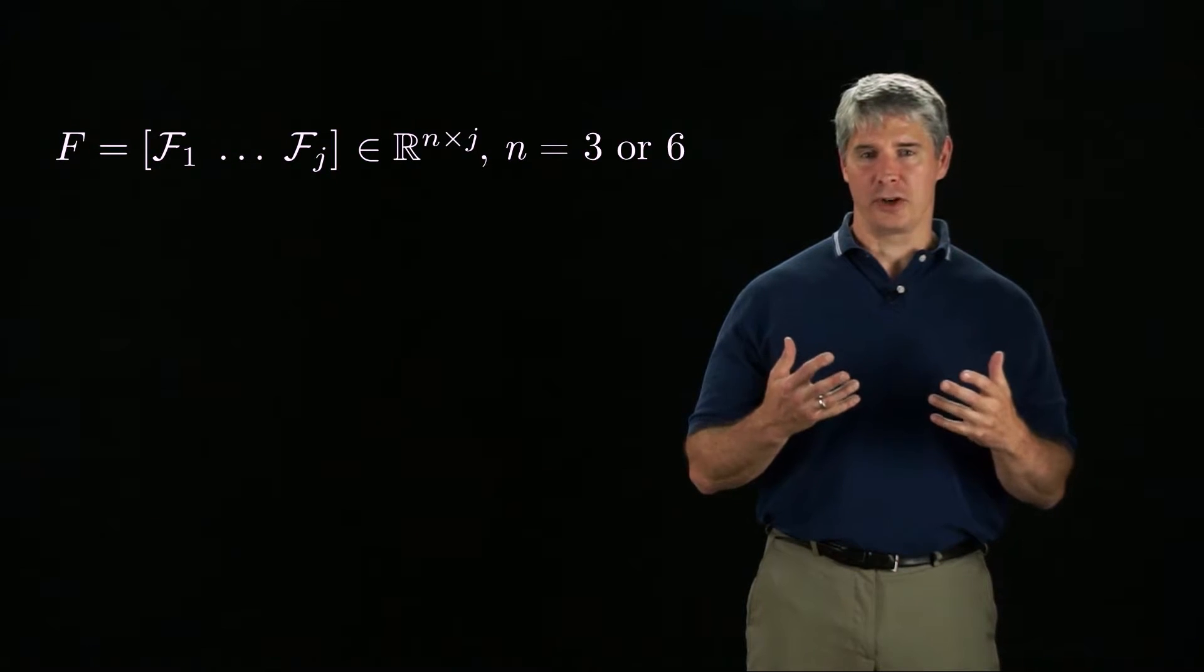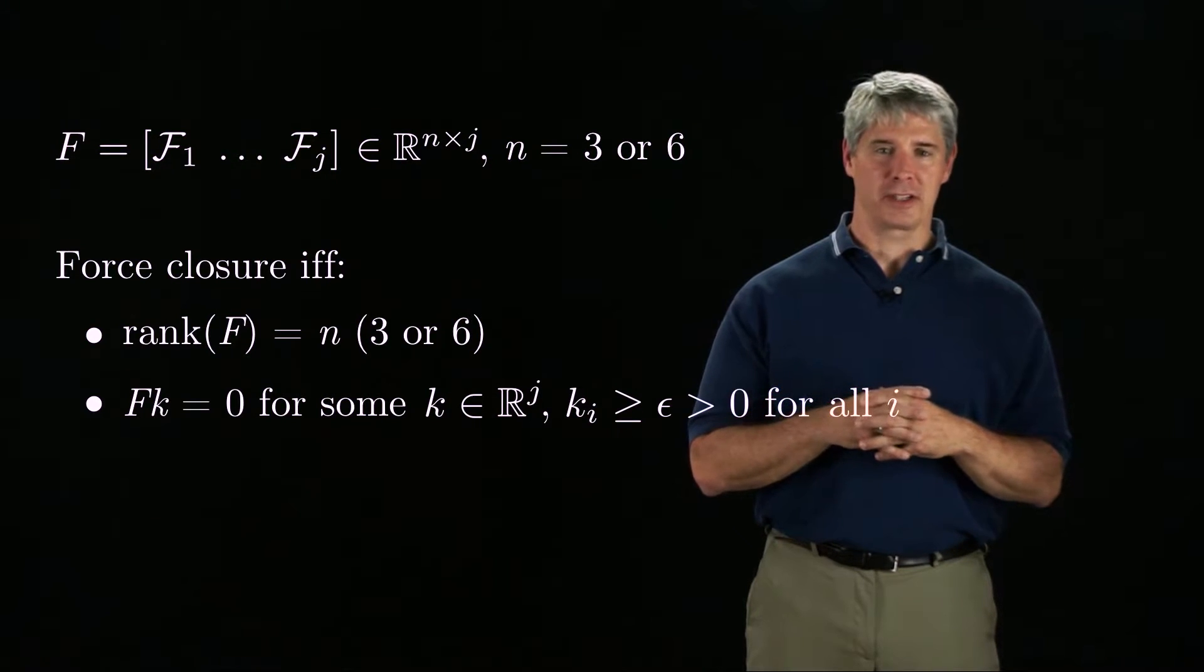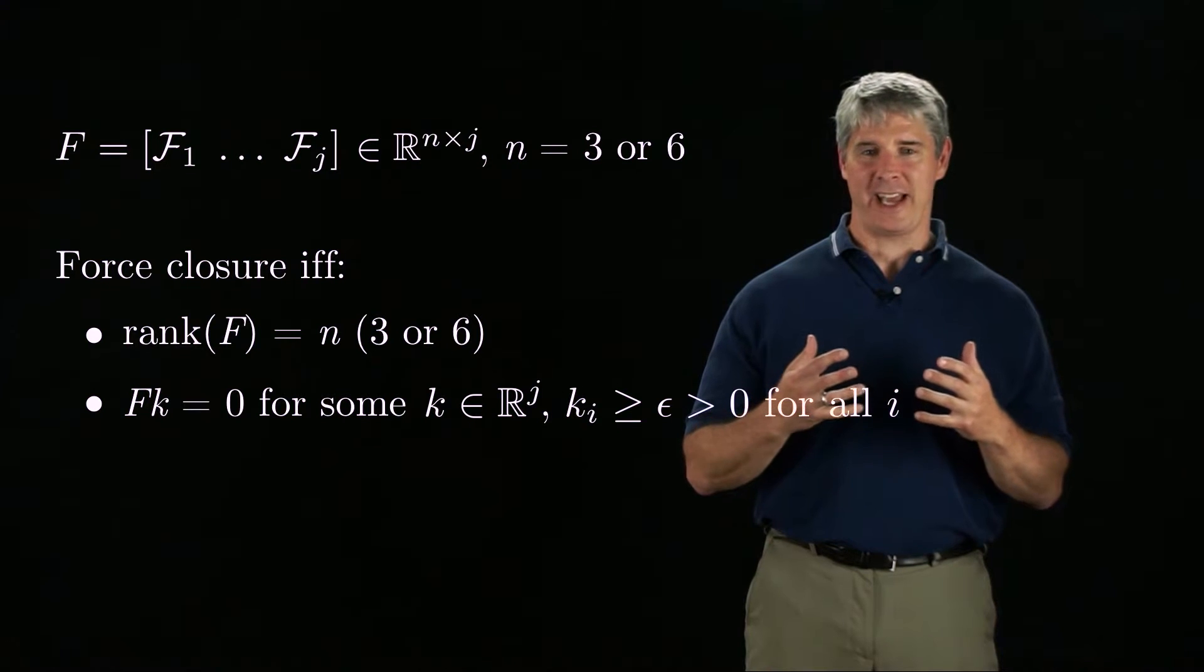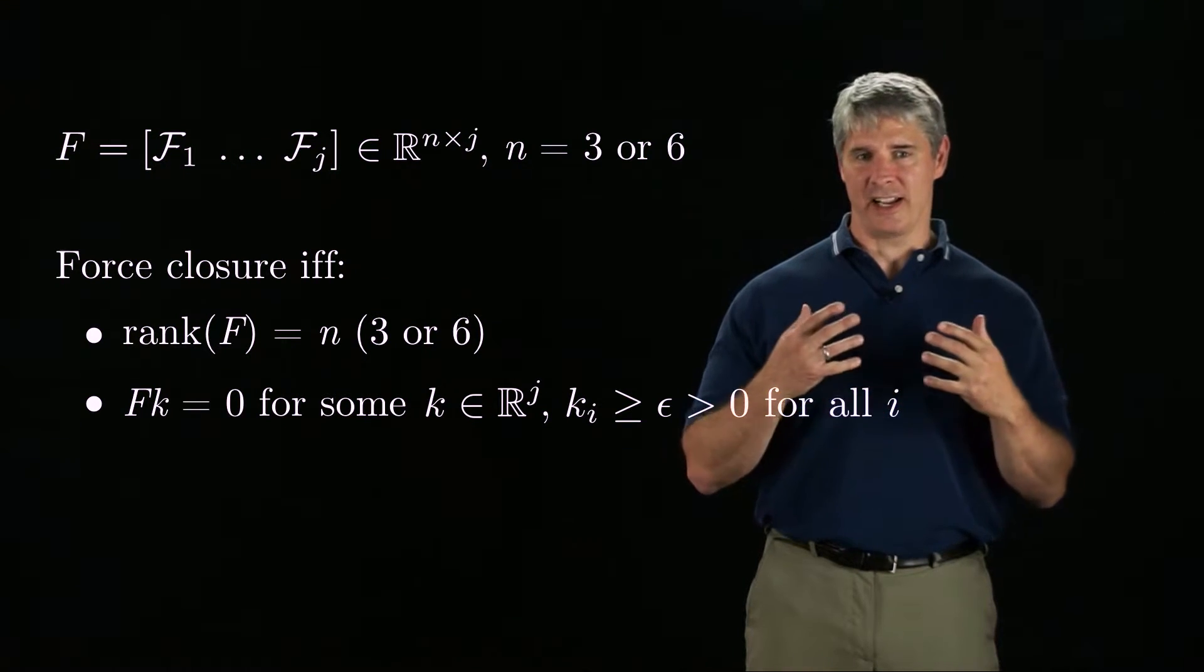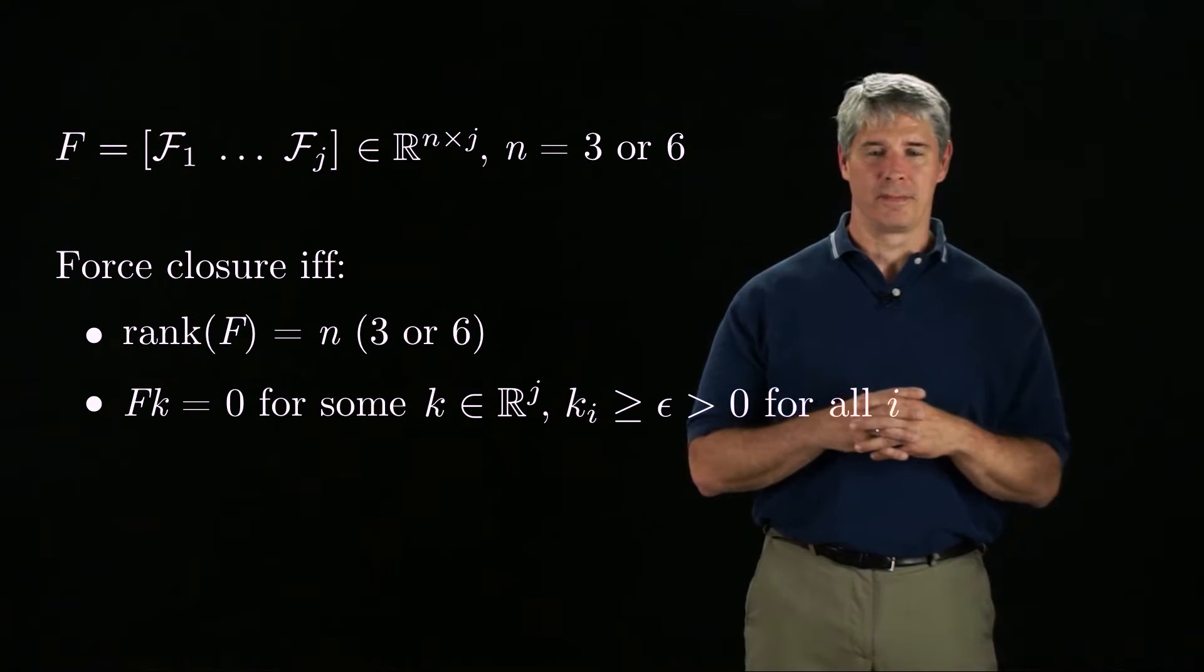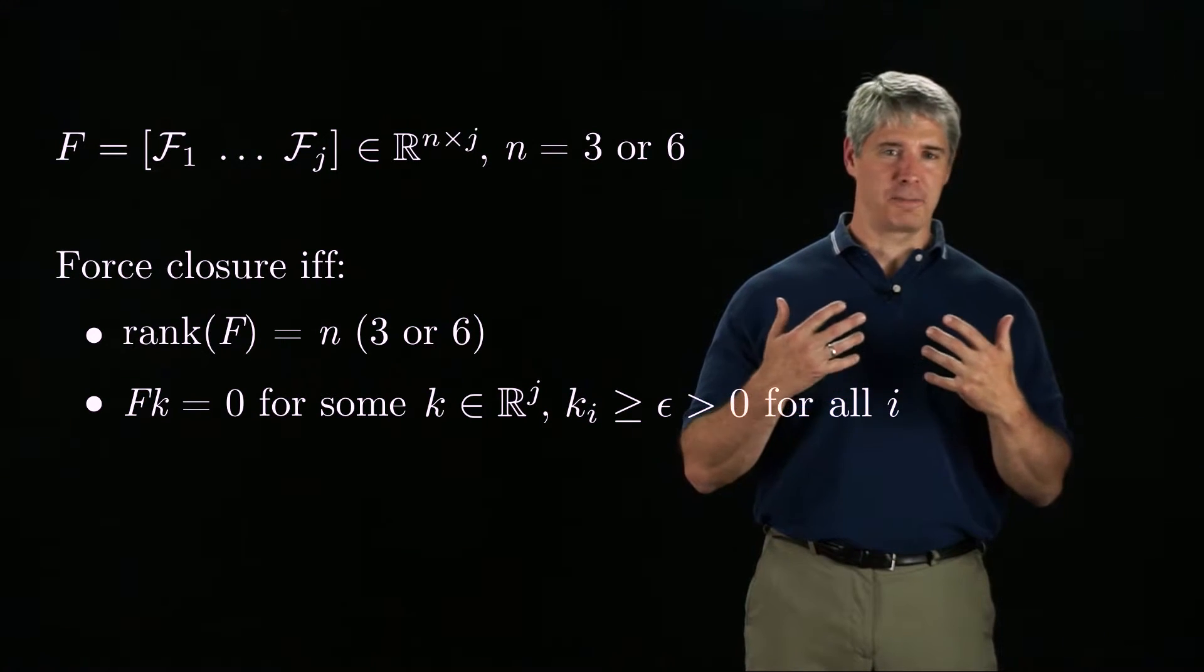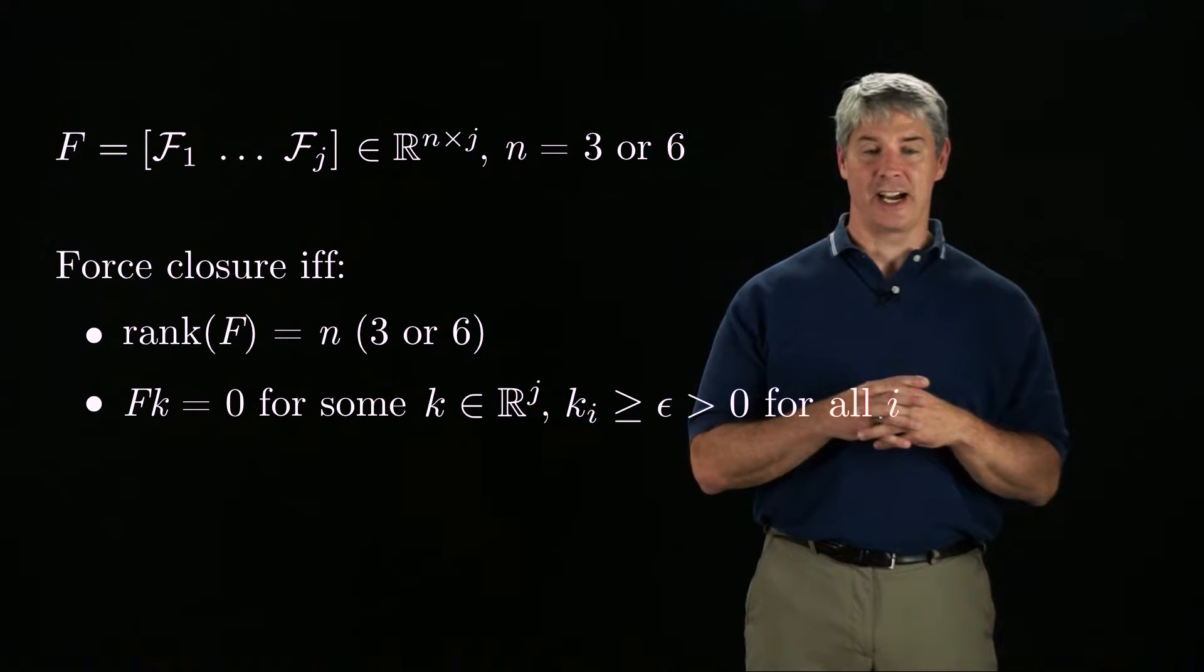The contacts yield force closure if and only if the F matrix is full rank and there is a vector K of positive coefficients multiplying the friction cone edges, such that F times K equals zero. This ensures that the positive span of the friction cone edges is the entire wrench space.